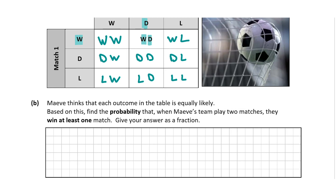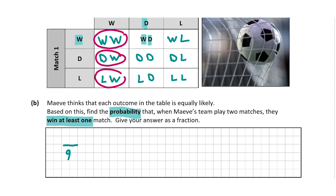In question B, we're told that Maeve thinks each outcome in the table is equally likely. Based on this, find the probability that when Maeve's team play two matches they win at least one match, giving your answer as a fraction. We know the denominator is nine because there are nine possible outcomes. So how many outcomes involve winning at least one match? Using my pink pen: this is one because they win both, they've won one here, one here, there's a win here and a win here.